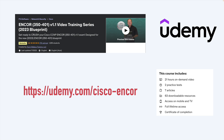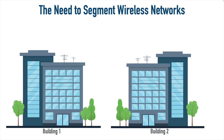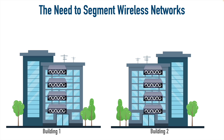Let's jump into wireless network segmentation. One of the things we love about managing lightweight access points as opposed to autonomous access points is that with a large wireless network — maybe an enterprise with multiple buildings and multiple access points — we can go to a wireless LAN controller and configure lots, if not all, of the APs in our enterprise.